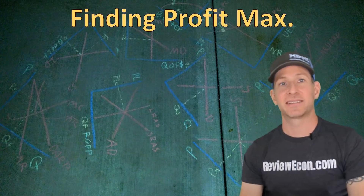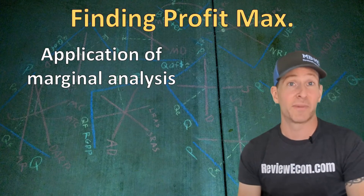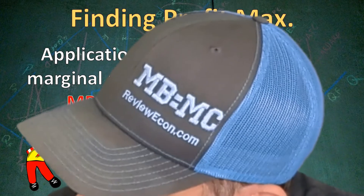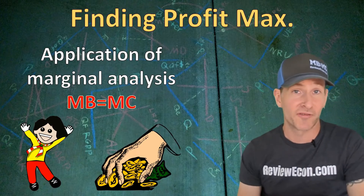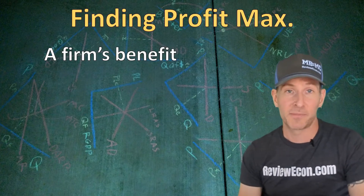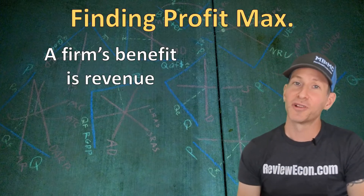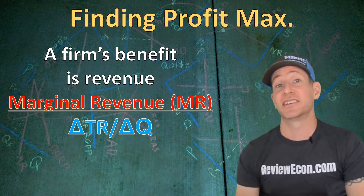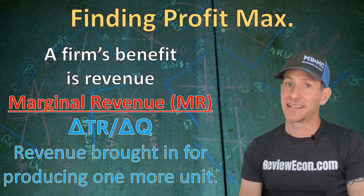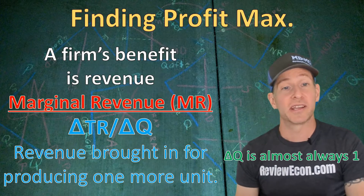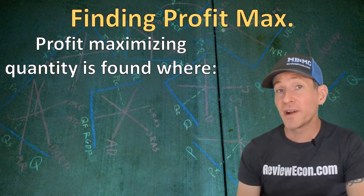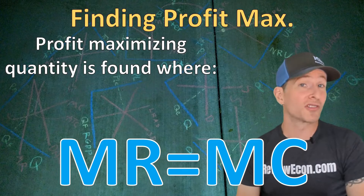Profit maximization is an application of marginal analysis from Unit 1. Benefit maximization is found where marginal benefit equals marginal cost. For an individual firm, the marginal benefit is called marginal revenue — the revenue earned for selling one more unit of output. Marginal revenue is the change in total revenue divided by the change in quantity, and since the change in quantity is almost always one, we can find marginal revenue simply by finding the change in total revenue. The profit-maximizing quantity is always found where MR equals MC.